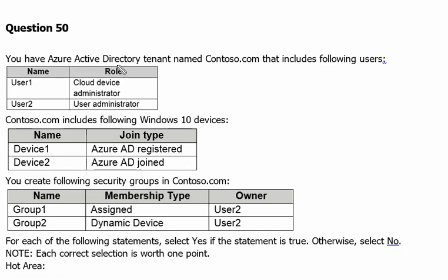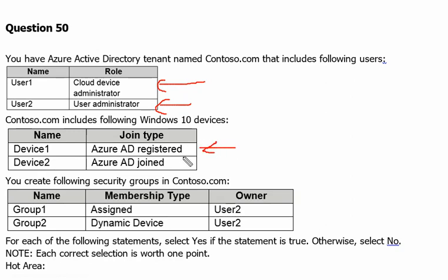You have an Azure Active Directory tenant named contoso.com that includes the following users. User one has the Cloud Device Administrator role and user two has the User Administrator role. Contoso.com includes the following Windows 10 devices: device one is joined as an Azure AD registered device and device two is joined as an Azure AD joined device.